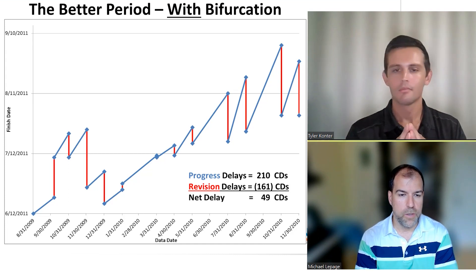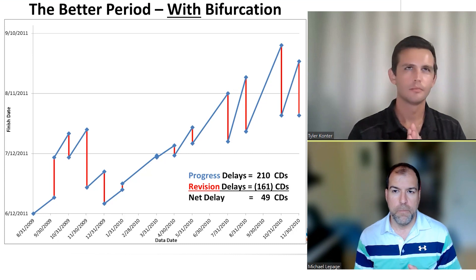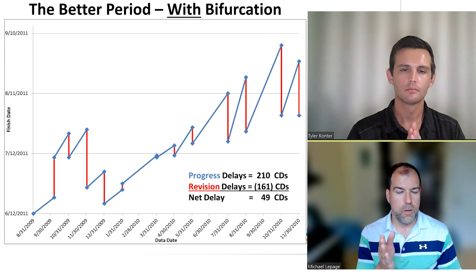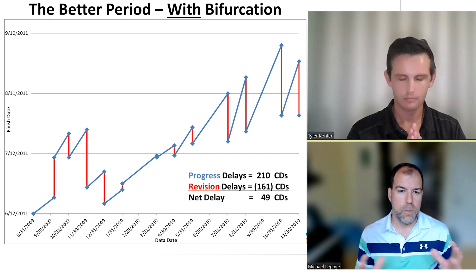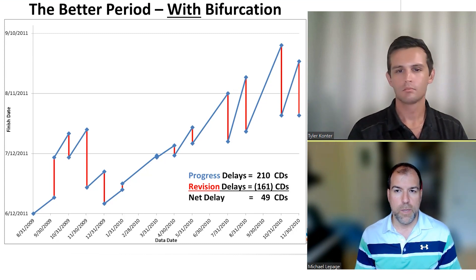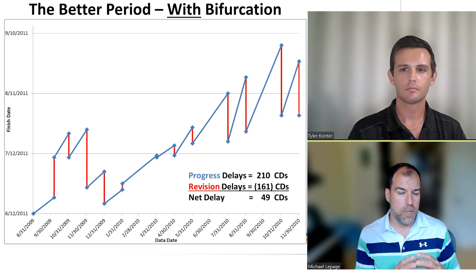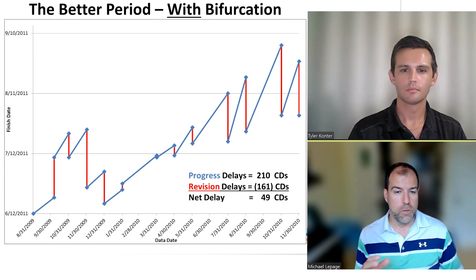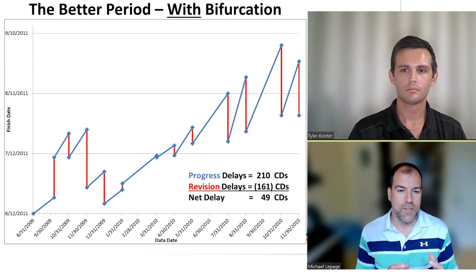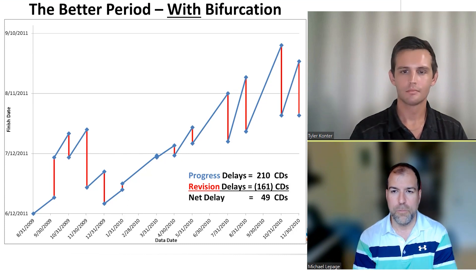I think of those revision delays as what I'd call squeezing the project. We're trying to find time so that we can report our finish date closer to where it should be. We're squeezing the project — taking any buffers that we might have had out, fast-tracking things where we probably can't actually fast-track them in the field. So we had 210 days of progress delay — bad progress, losing 210 days in the schedule — and to compensate, we then squeezed another 161 days out of the schedule. It seems like it's just a bad situation all around.